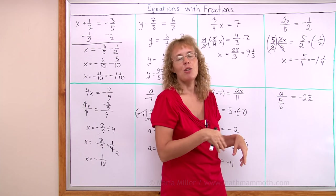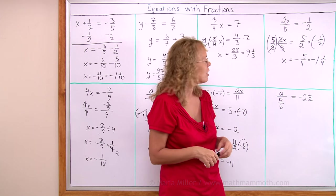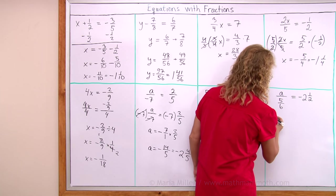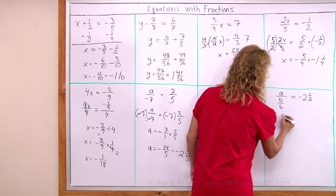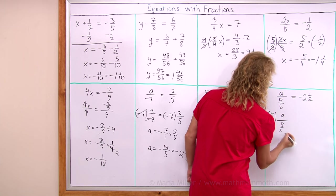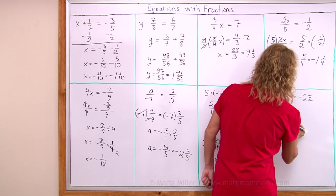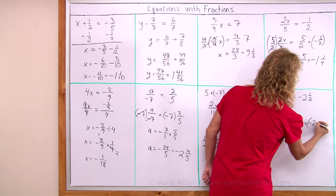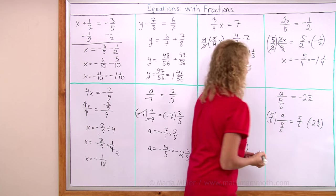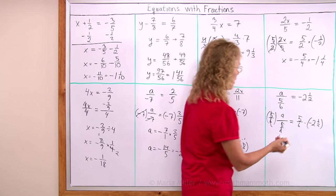Multiply both sides by 5 sixths. So 5 sixths times a over 5 sixths equals on this side 5 sixths times this negative 2 and a half. Over here this now cancels, a is left alone.